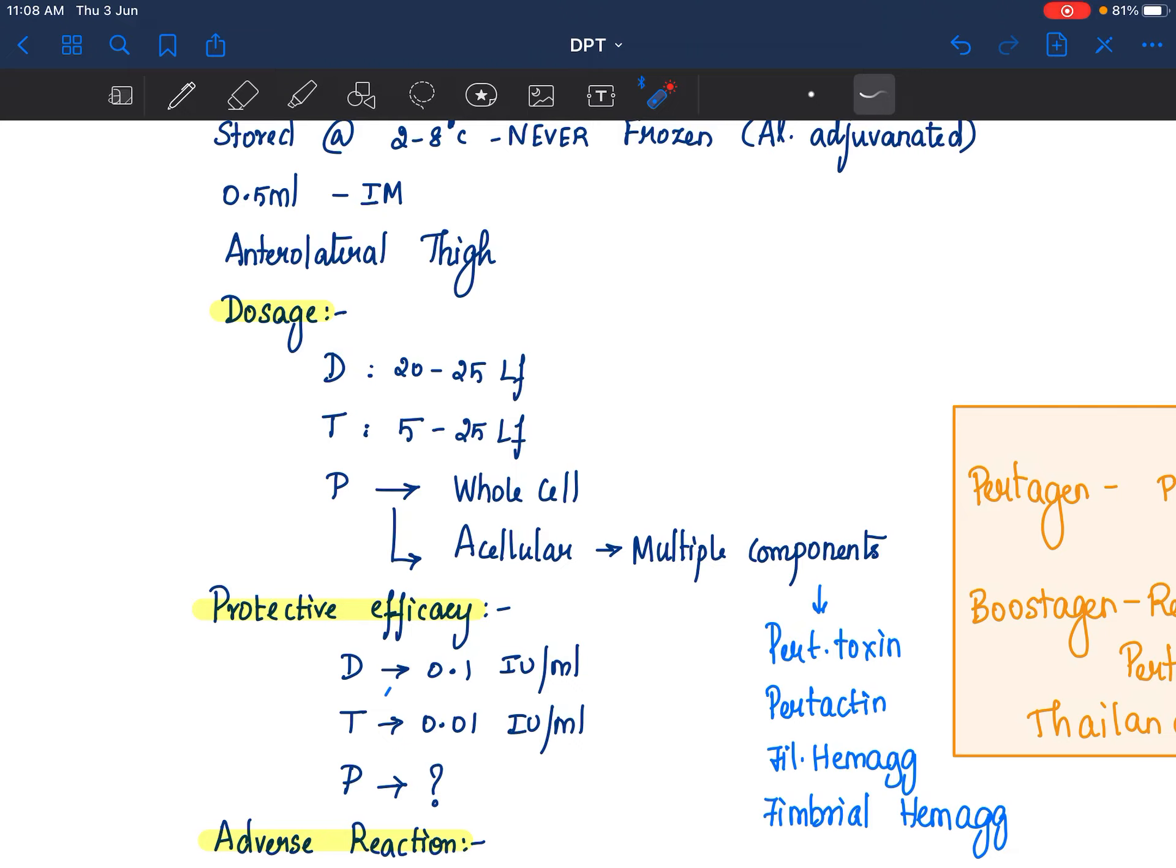And how do you know it is effective? There are protective efficacy levels that are established for diphtheria and tetanus. But it is not for pertussis. So for diphtheria, if you have 0.1 international units per ml of antibodies, it is told to be effective.